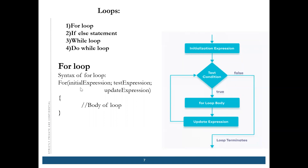The syntax of the for loop is: for(initial expression; test expression; update expression). We initialize the expression — for example, x equal to one, x equal to two — that is the initialization.